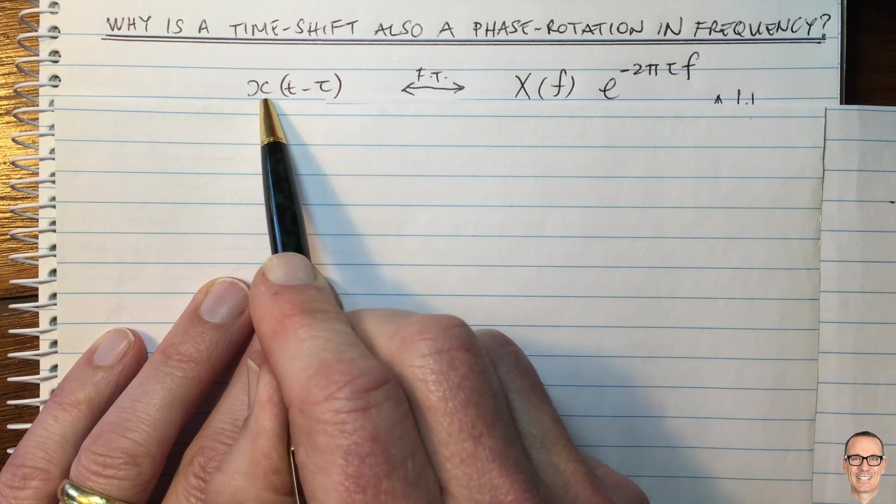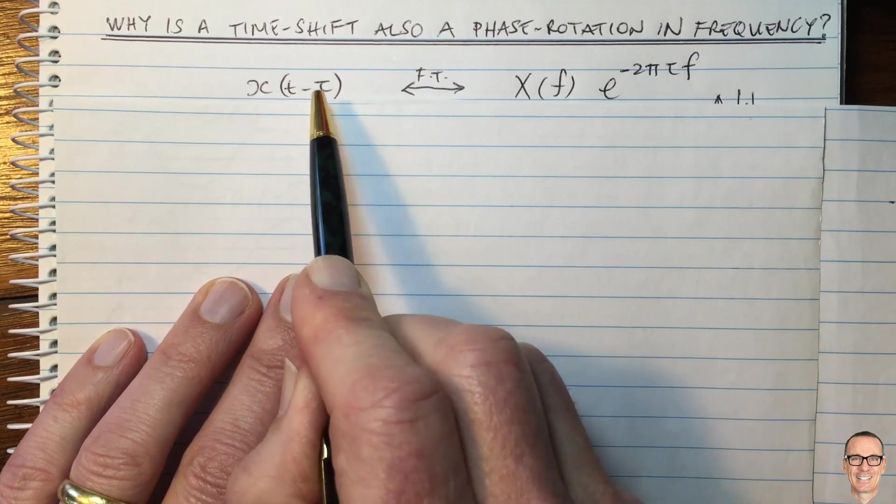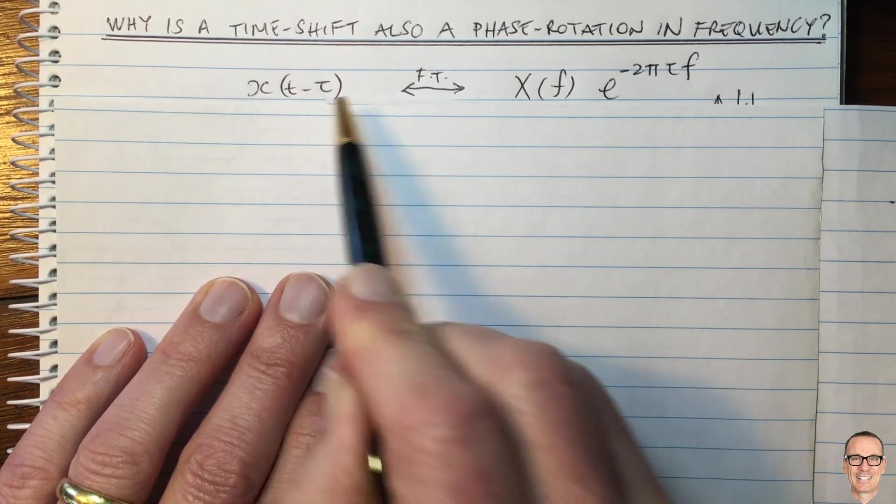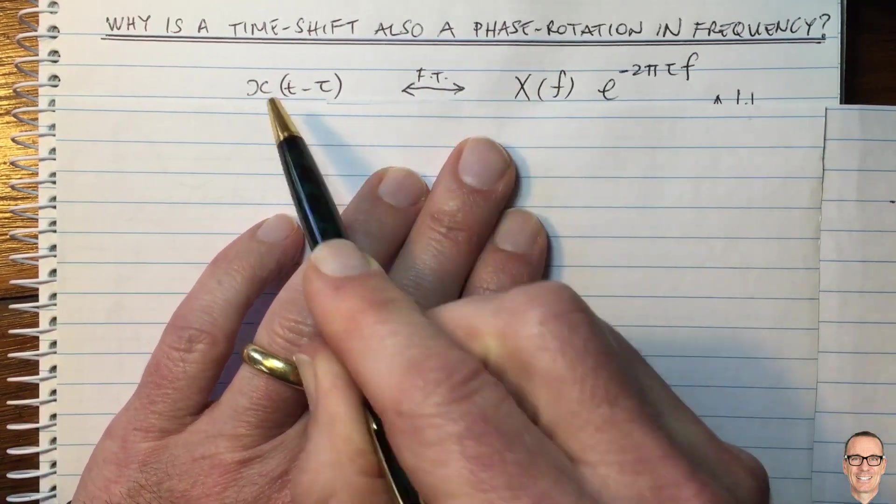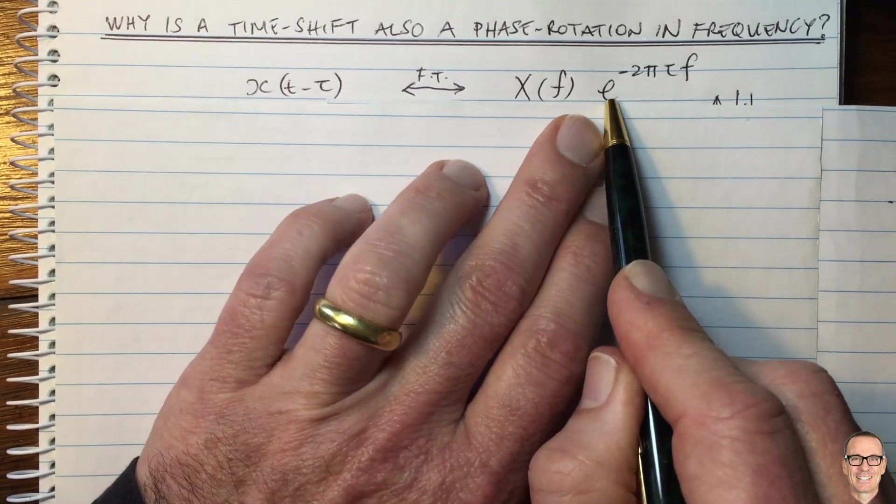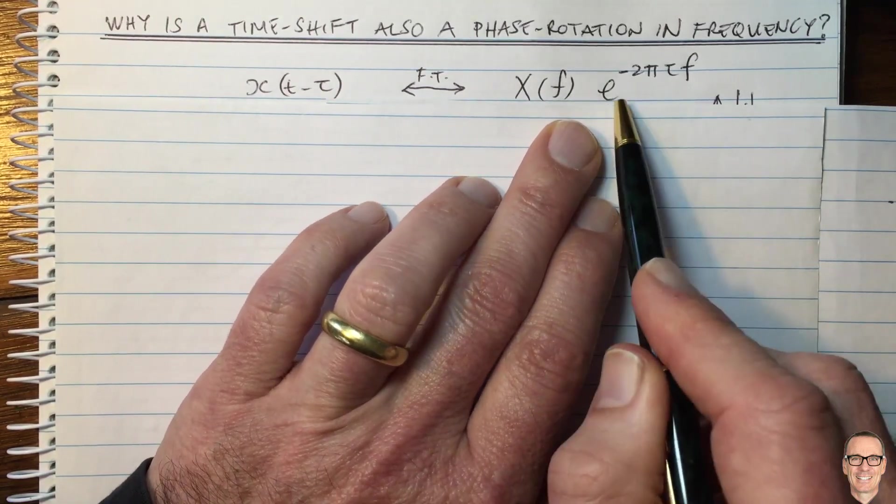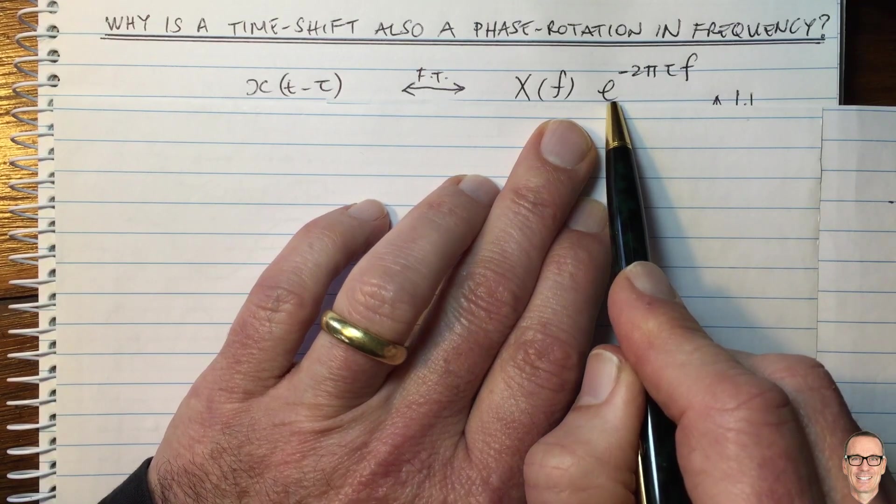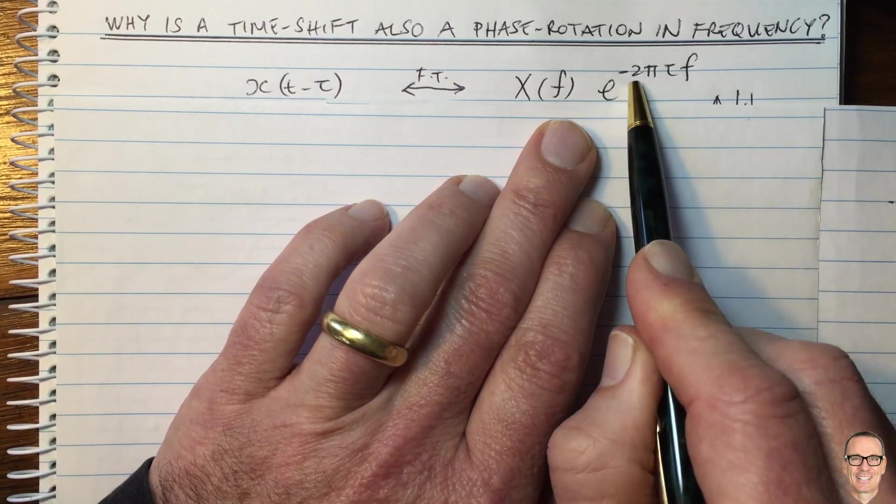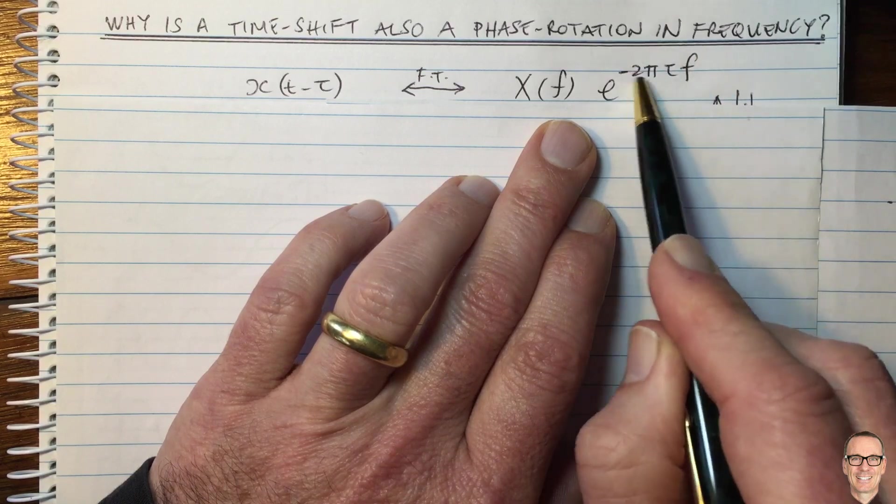Here it says the time domain signal X, when it's shifted in time by Tor, the Fourier transform says that you get the same Fourier transform as the original signal, but multiplied by this term here. This is a complex number with a unit magnitude. So therefore, it is only doing a phase rotation.